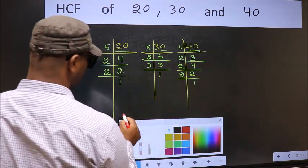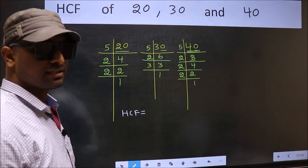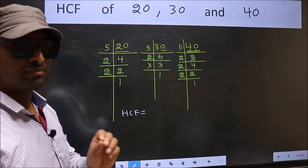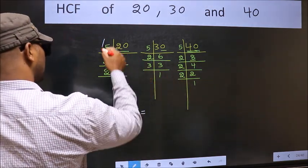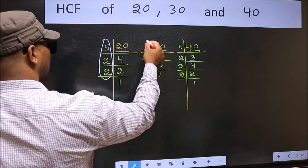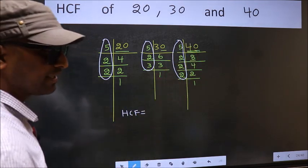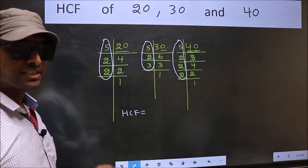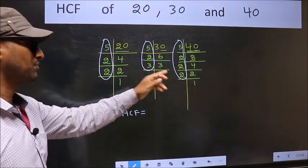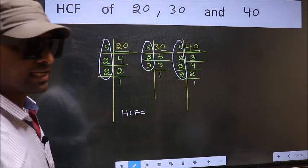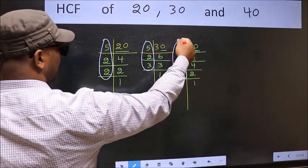Therefore, the HCF is the product of numbers which should be present in all three places — here, and here, and also here. HCF is the product of numbers which are present in all three places. So now let us find the numbers which are present in all three.